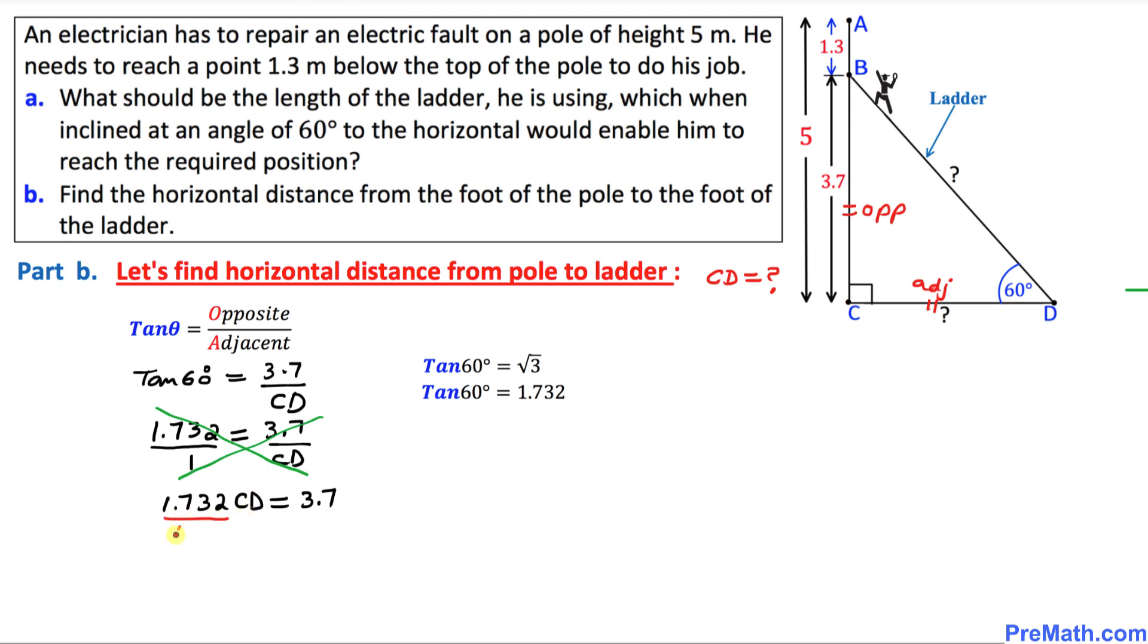I'm going to divide both sides by 1.732. These numbers cancel out. We simply got CD, and if I divide these numbers, we are going to get 2.14.